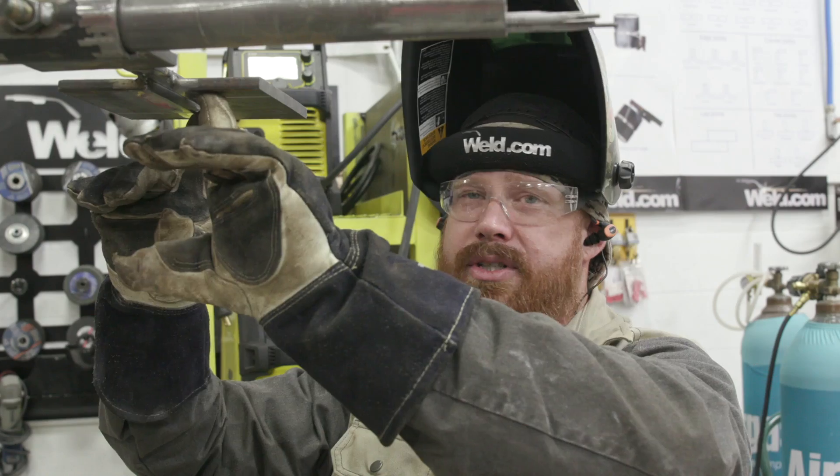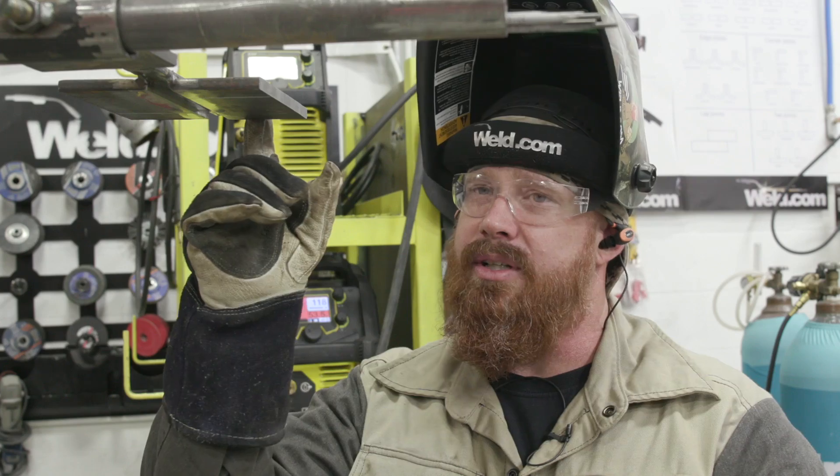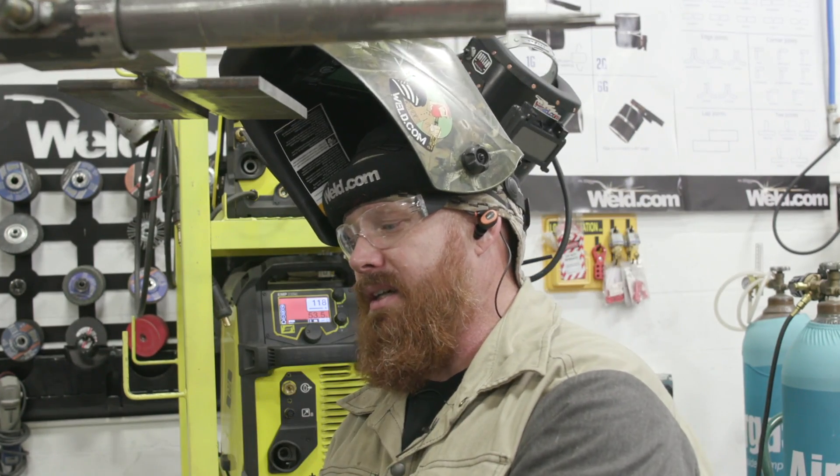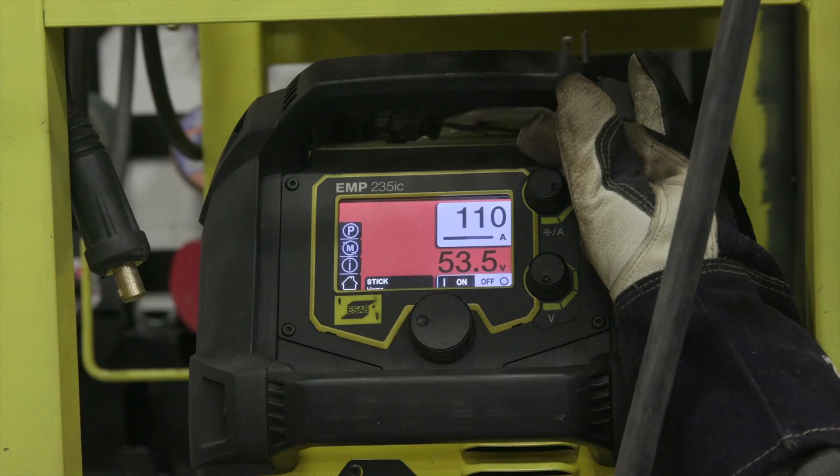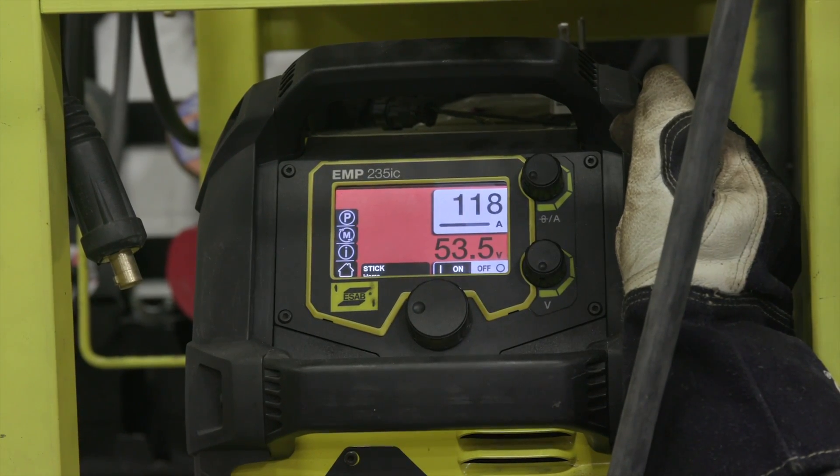We have two starts and stops, each taking place on the root. One side is a square bevel, the other side is a 30 degree angle. We're running 7018-1 primes on the ESOB 235 at about 118 amps this time. Going overhead, I like to run a little bit hotter than vertical. I really want that weld to punch up in there.